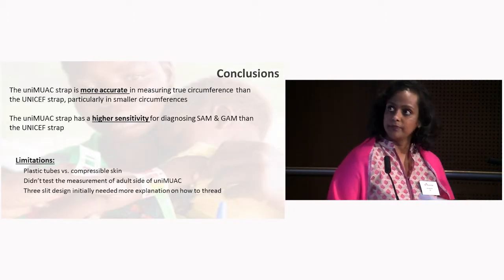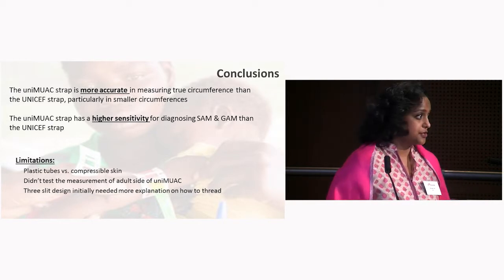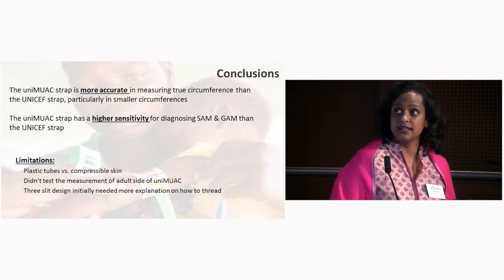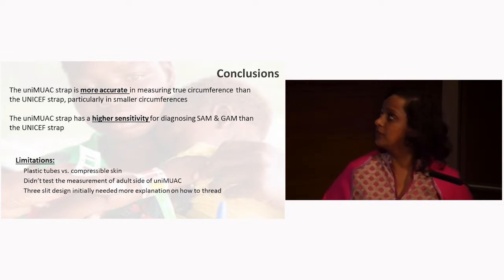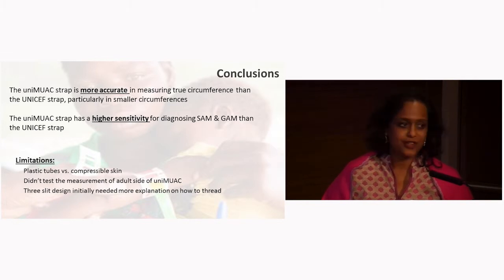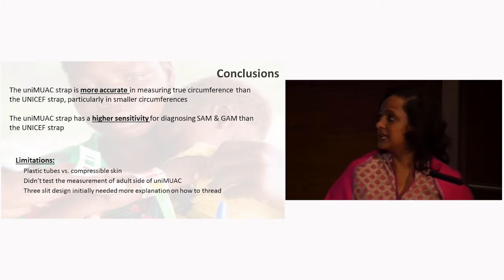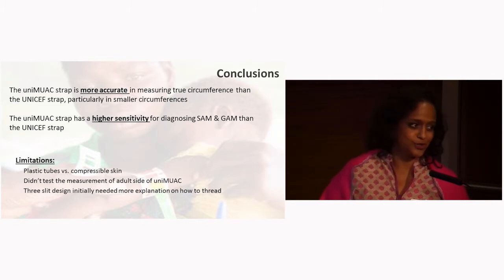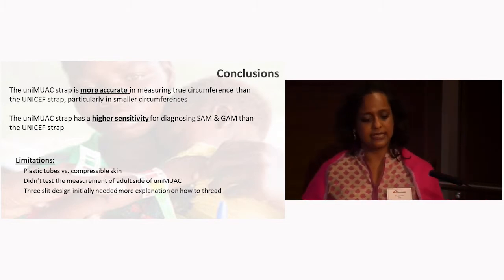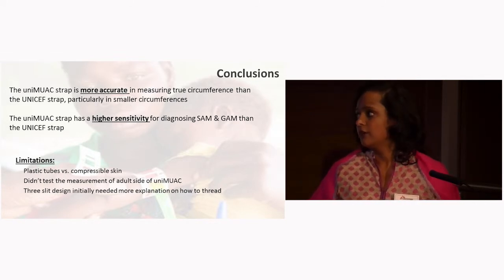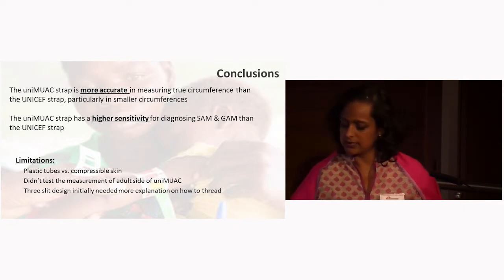In conclusion, the uni-MUAC strap is more accurate in measuring true circumference than the UNICEF strap, particularly so in small circumferences, and has a higher sensitivity for diagnosing SAM and general acute malnutrition. There were, of course, limitations to our standardization exercise: we used plastic tubes and not human compressible skin, we didn't test the measurement side of the adult uni-MUAC, and the three-slit design required more initial explanation than the more intuitive UNICEF MUAC, which only has one slit.